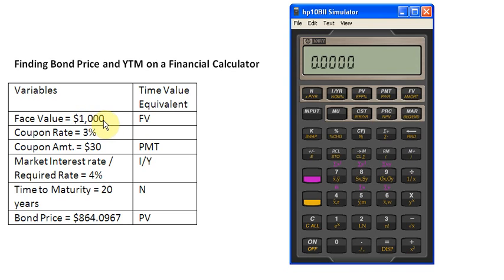The face value of the bond is $1,000. In time value terms, I'm going to enter it as a positive number and store it into the future value button.